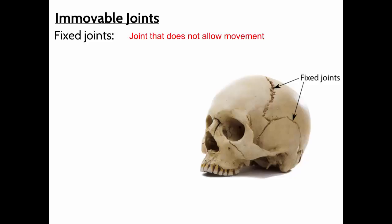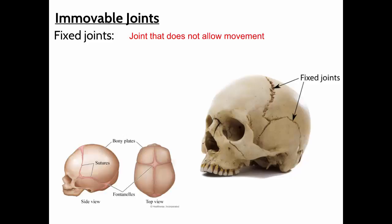In babies, the cranium is not fully fused — there's an area called the fontanelle, or 'soft spot.' These plates in the cranium haven't fused yet, and in a baby you can actually see it move up and down with their heartbeat. It's important that it doesn't fuse until the brain grows to the proper point. In some babies those bones fuse too early, the brain can't grow properly, pressure builds up, and they may need surgery. So it's important those bones aren't fused until the right time in the baby's development.